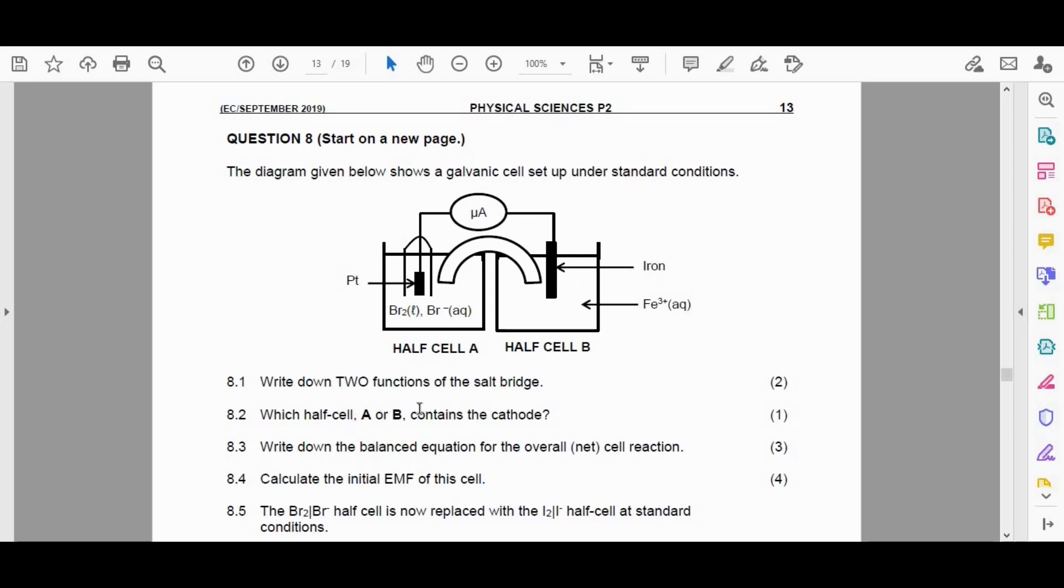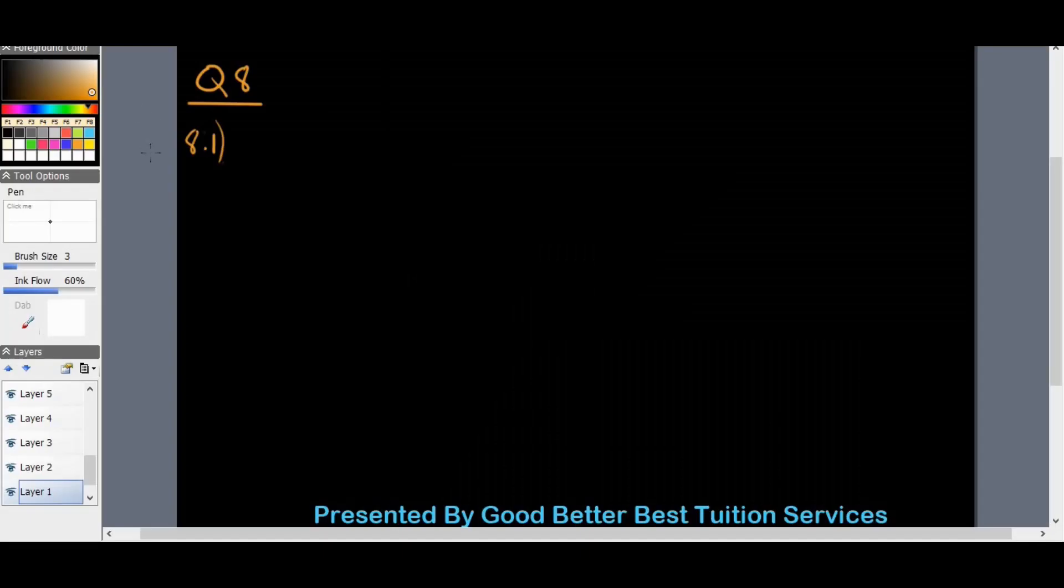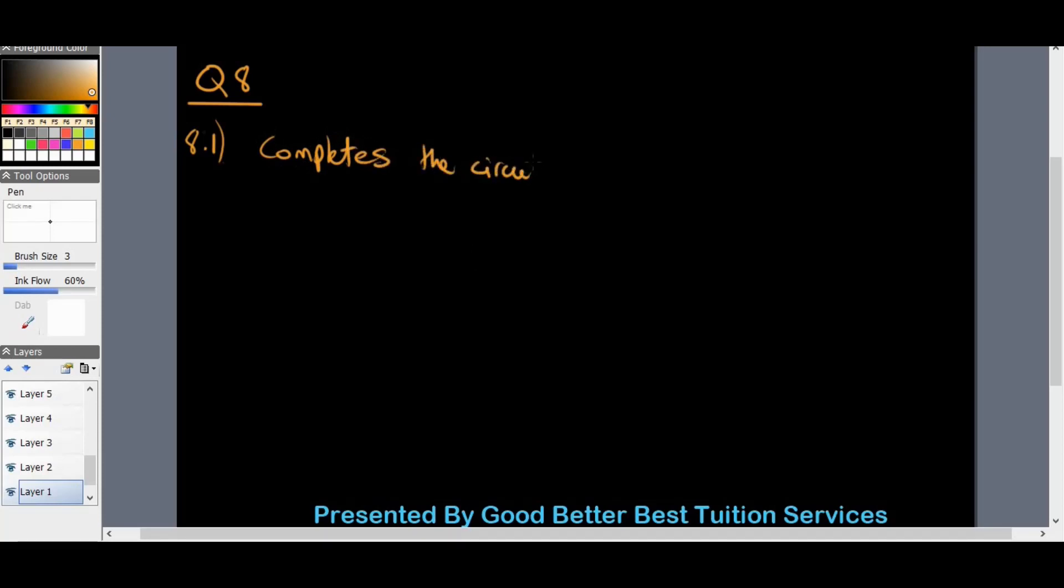8.1 says write down two functions of the salt bridge. Well, the functions of salt bridge do include the following. They just asked to give us two, but one of the most simplest and easiest to remember is the fact that it completes the circuit.